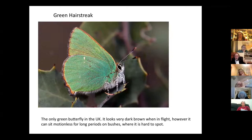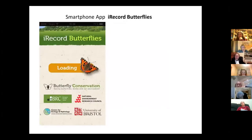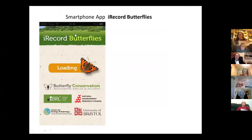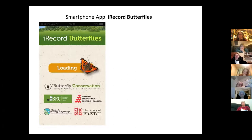I'm a great advocate of a smartphone app called iRecord Butterflies. When you first put it on your phone you need to give it some information about who you are, and I'd advise letting it see the GPS information from your phone — it saves a lot of work. Once that's loaded, if you've seen a single butterfly at a place you can press on it and it will take the information.